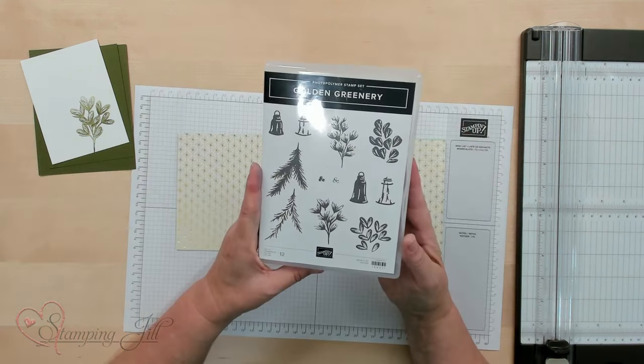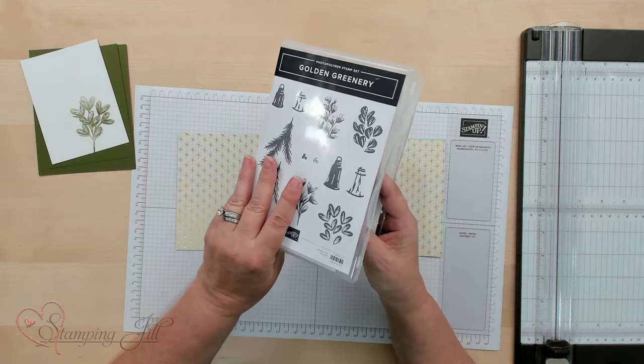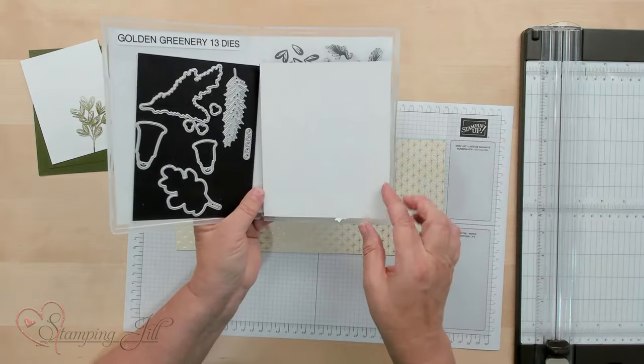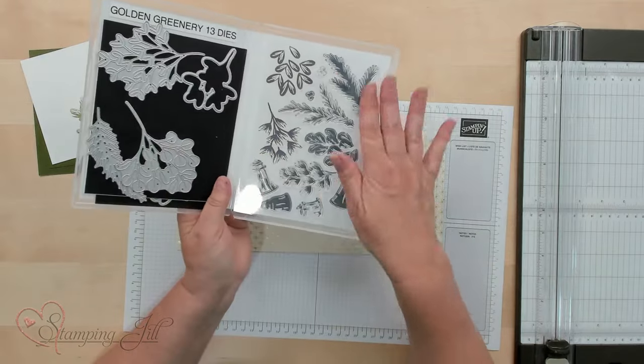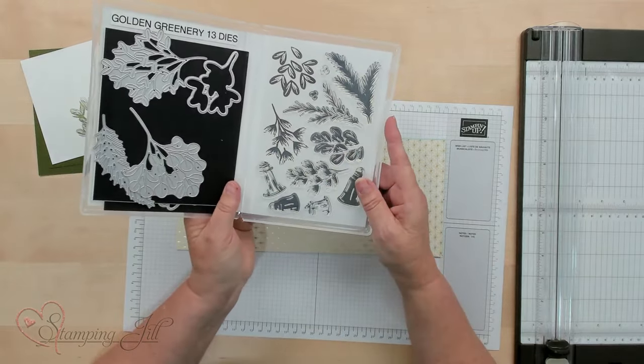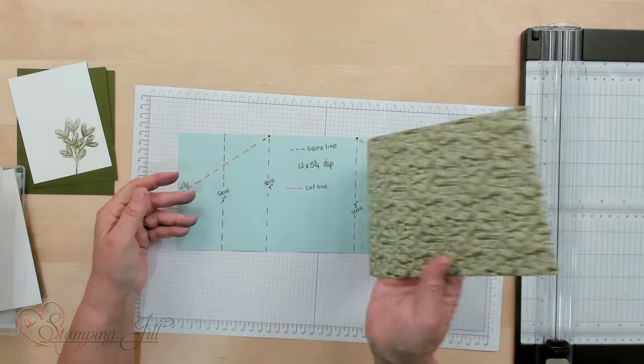I'm using the Golden Greenery stamp set and it actually lends itself to Christmas but I'm not using it as Christmas because it's got such cool patterns to it. I love the greenery in this stamp set. And I'm going to be using the Season of Gold Designer Series paper.